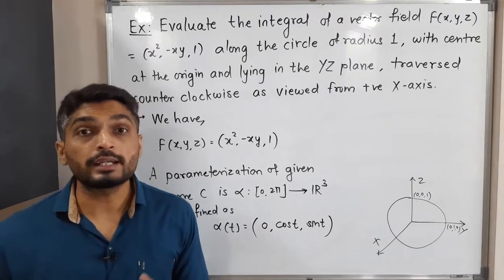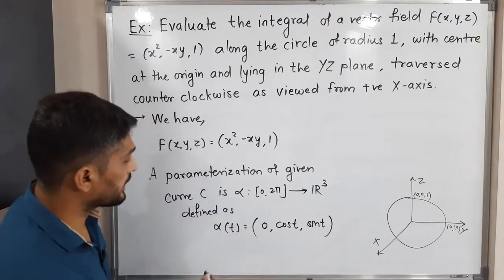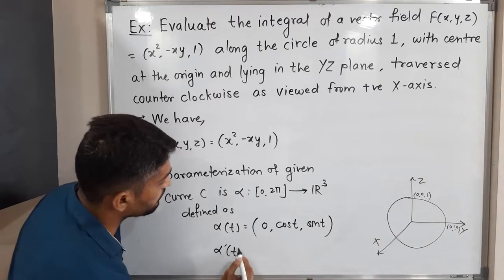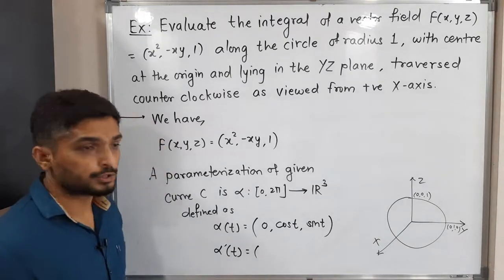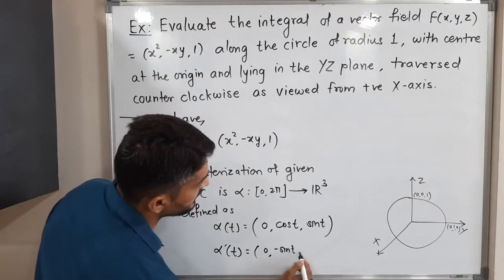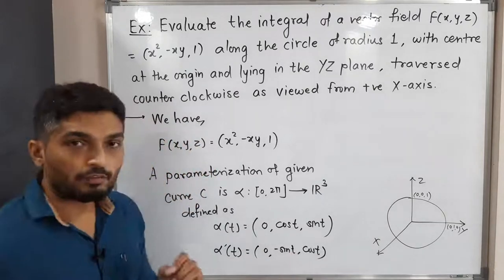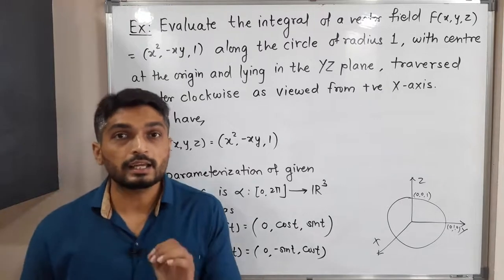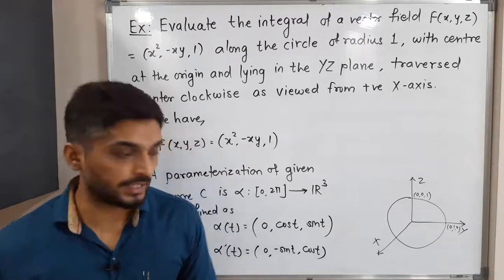So now we have a parametrization. After that, what we do, we find its derivative. Let us find its derivative α'(t). Component-wise derivative is very easy. Derivative of 0 is 0, derivative of cos t is -sin t, and derivative of sin t is cos t.